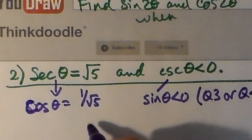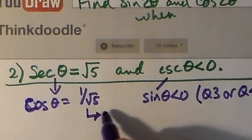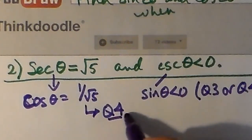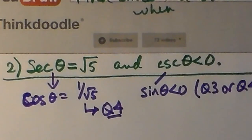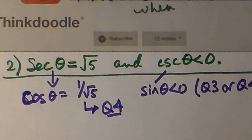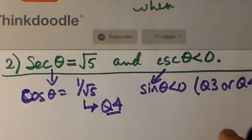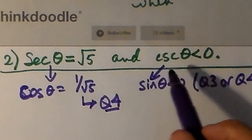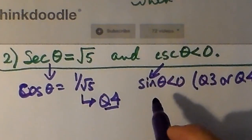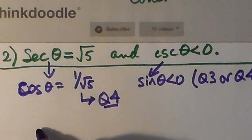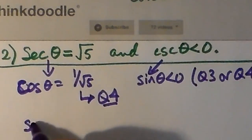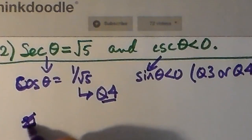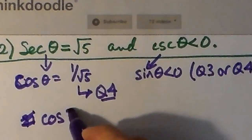For cosecant θ: since it's negative, sine θ must be negative, because cosecant is 1 over sine. Sine is negative in quadrant 3 or quadrant 4, given the CAST rule. But the fact that cosine is positive means θ must be only in quadrant 4, because that's where cosine is positive and sine is negative.